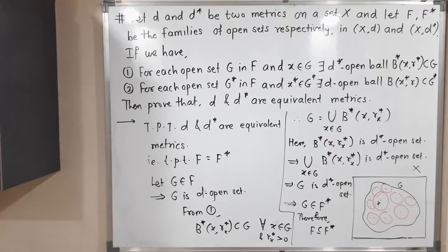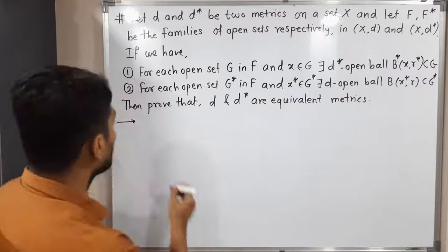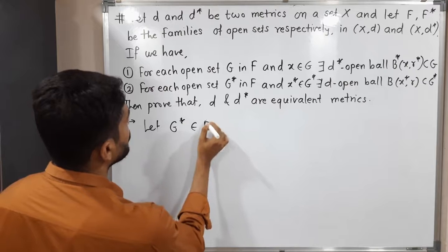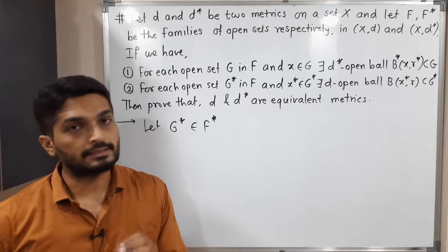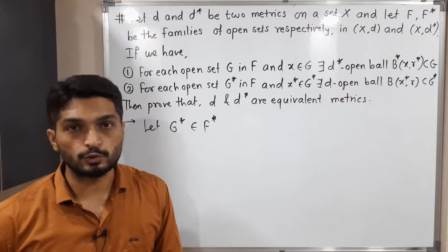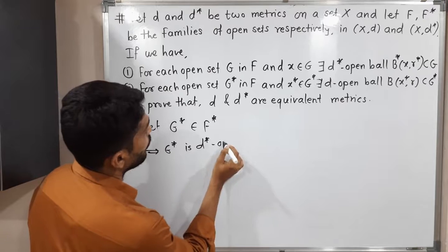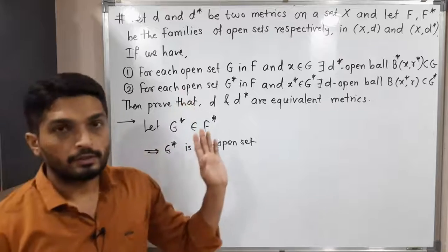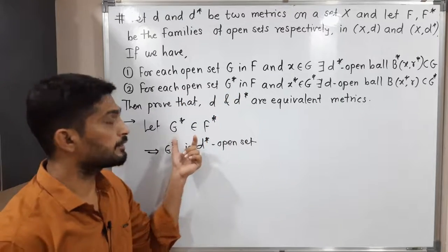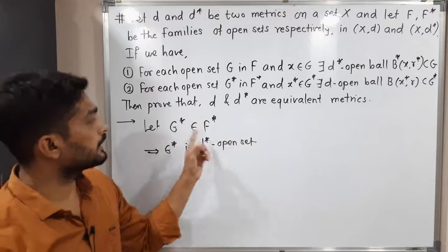Now our target is to prove F* is a subset of F. We will follow the same procedure. To prove F* ⊆ F, let us take one arbitrary element from F*. Let G* belong to F*. Since F* is a family of D*-open sets and G* belongs to F*, G* is also a D*-open set.